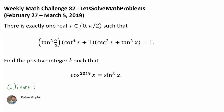There is exactly one x in the interval from 0 to π/2 such that tangent squared of x over 2, times cotangent of x to the 4th plus 1, times cosecant squared of x plus tangent squared of x, equals 1. We wish to find the positive integer k such that cosine of x raised to the 29th power equals sine of x raised to the kth power.